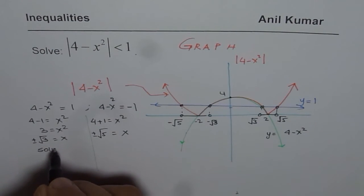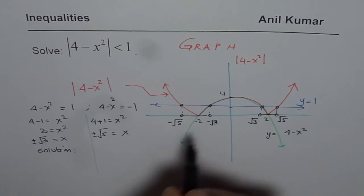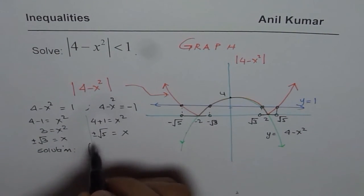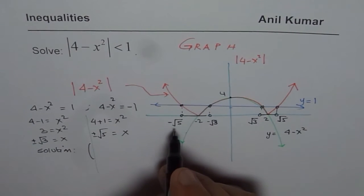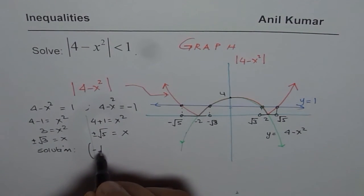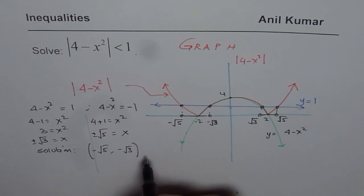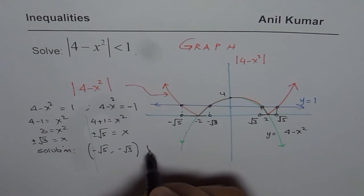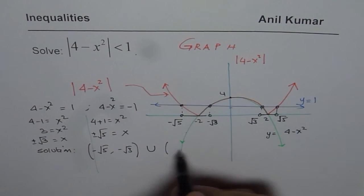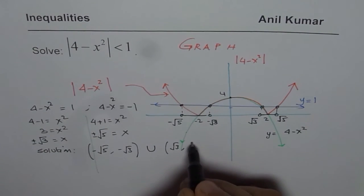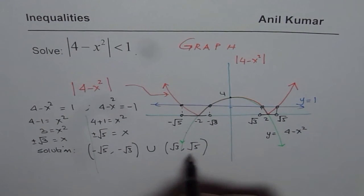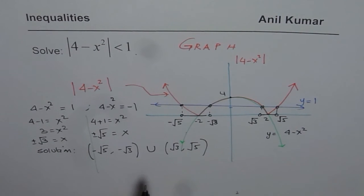We say solution is that x is between, since it is less than, not equal to, minus square root of 5 to minus square root of 3, and that is union, square root of 3 to square root of 5. So that is how you can actually understand and solve with the help of a graph. Correct? So that is an easy way of doing it.